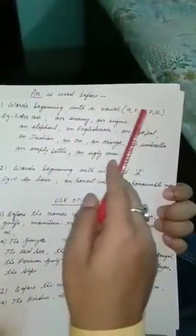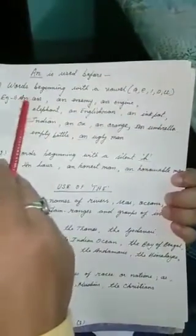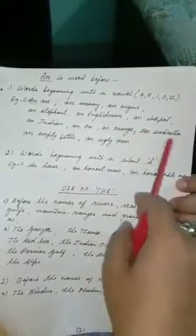AN is used before words beginning with a vowel. A E I O U, there are five vowels. Now you can see the example. An ass, an enemy, an engine, an elephant, an Englishman, an inkpot, an Indian, an ox, an orange, an umbrella, an empty ball, an ugly man. So you have to put AN before a vowel. A is here, that's why I have to put AN.